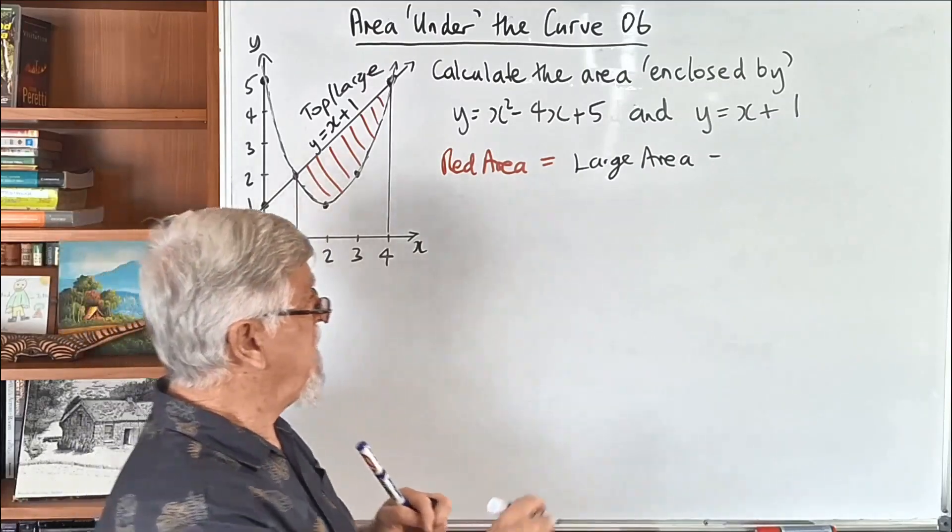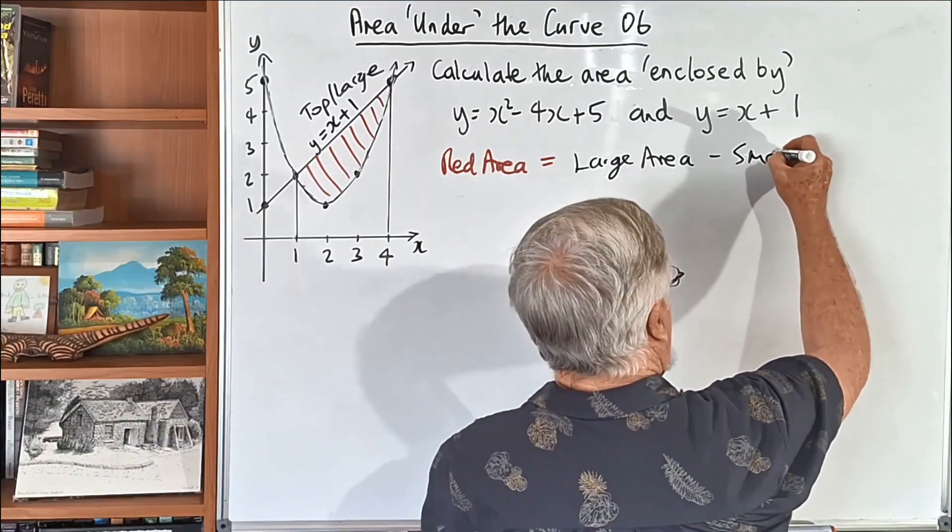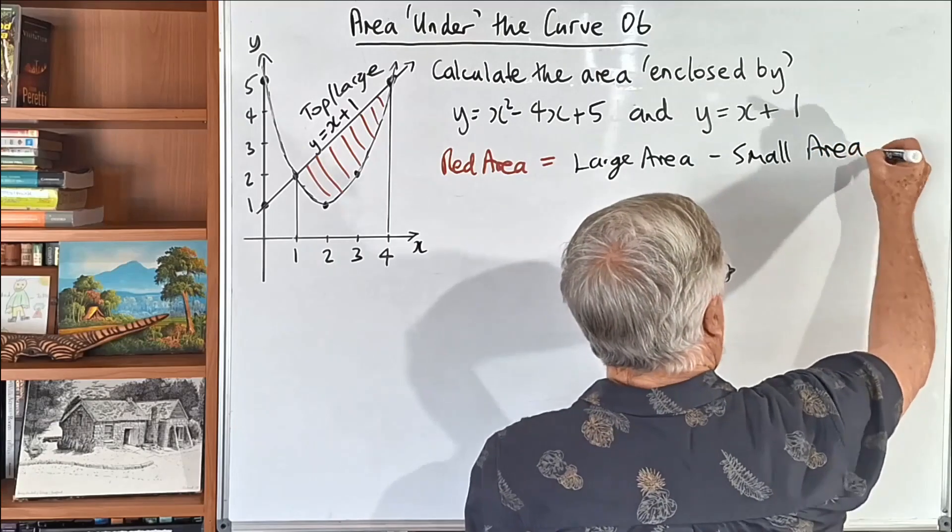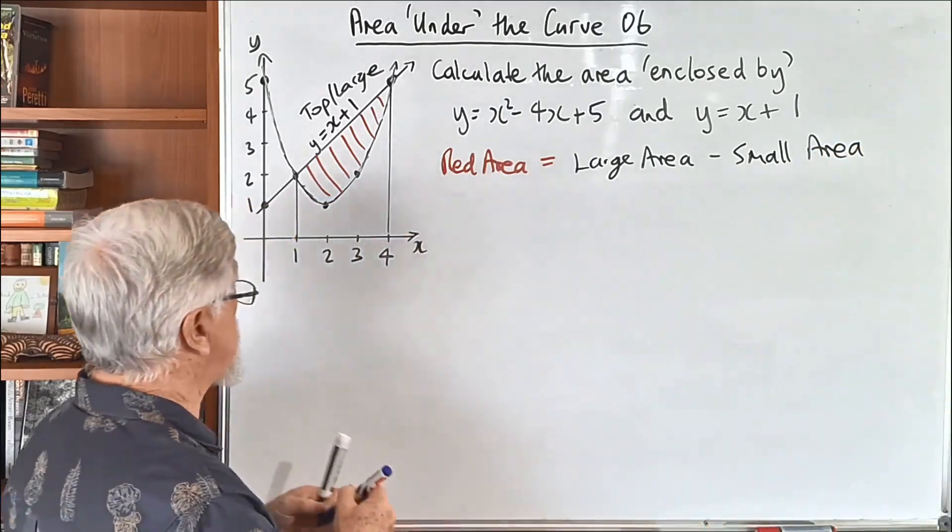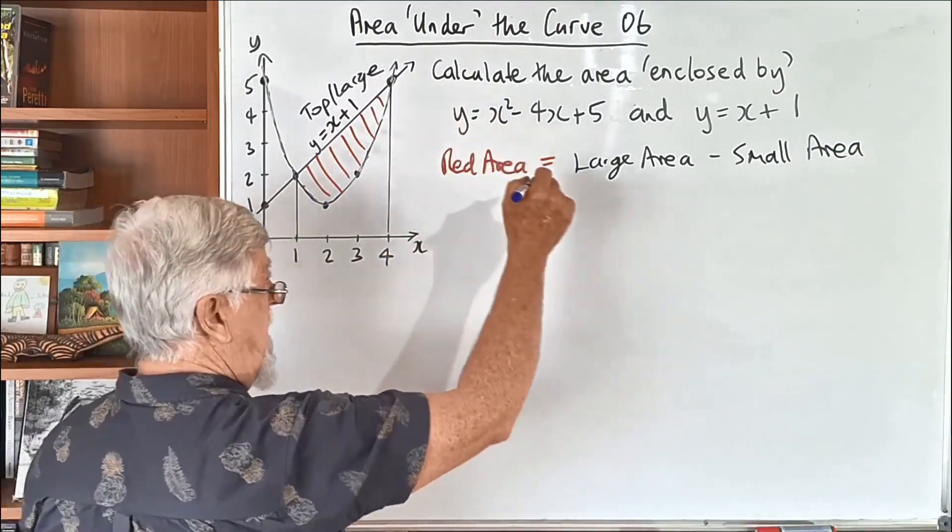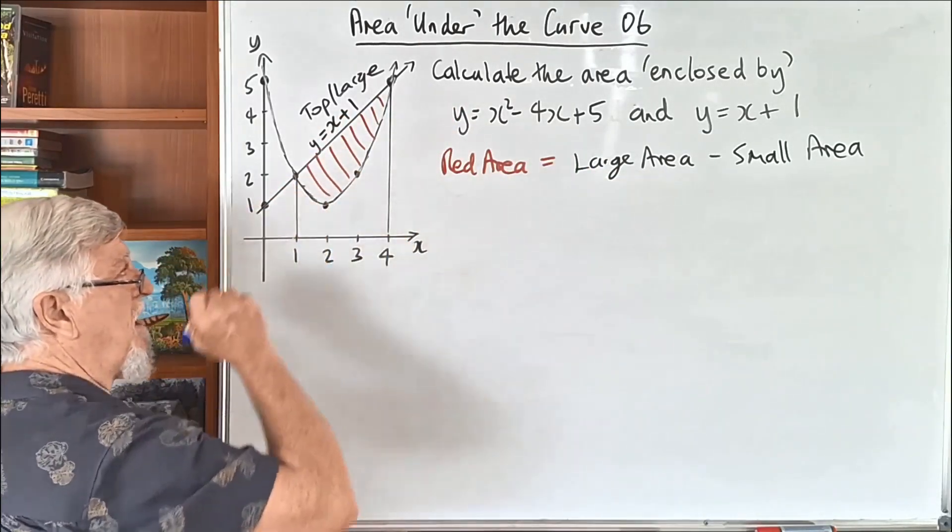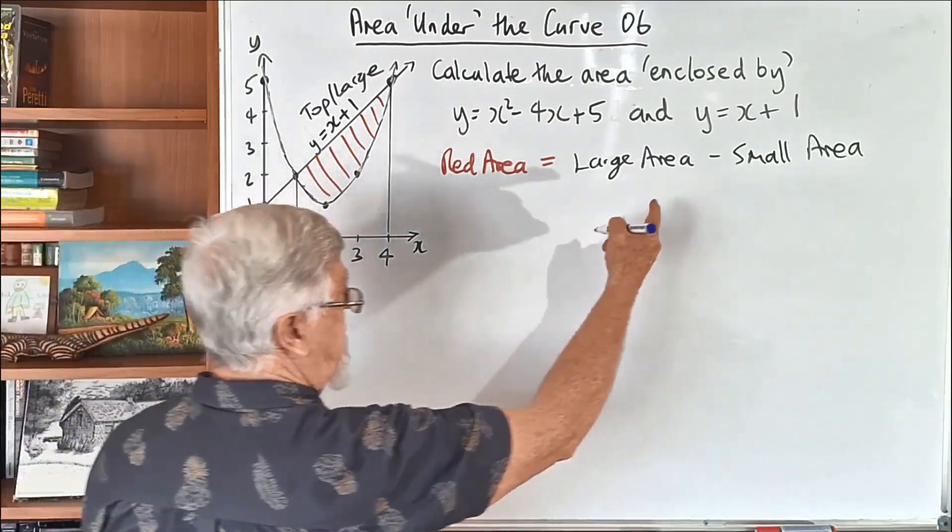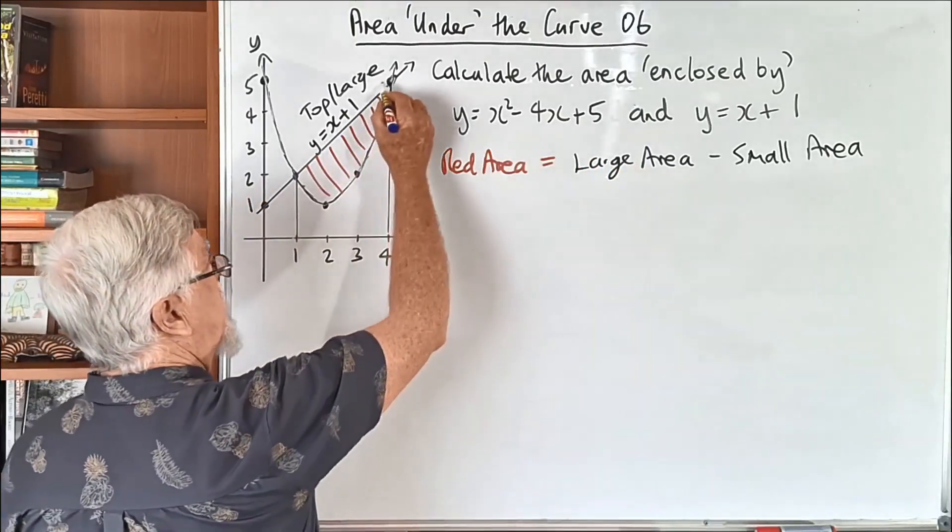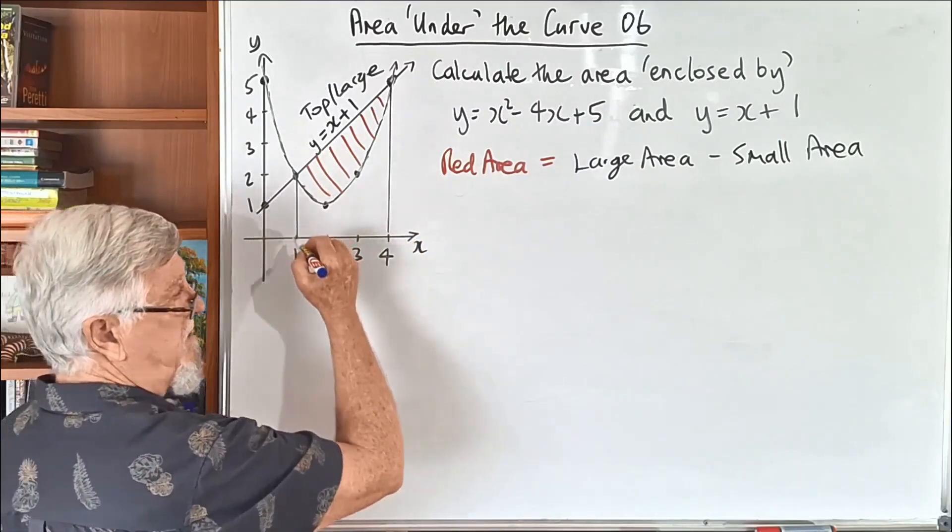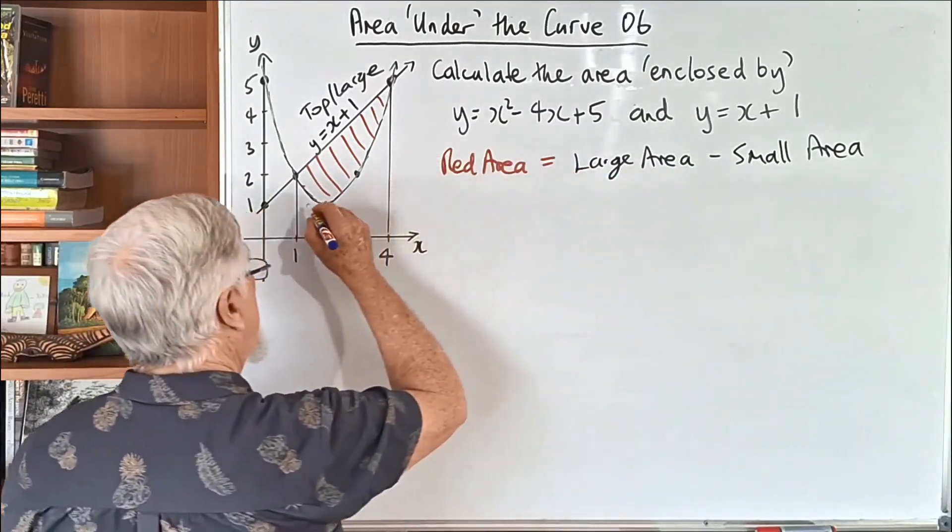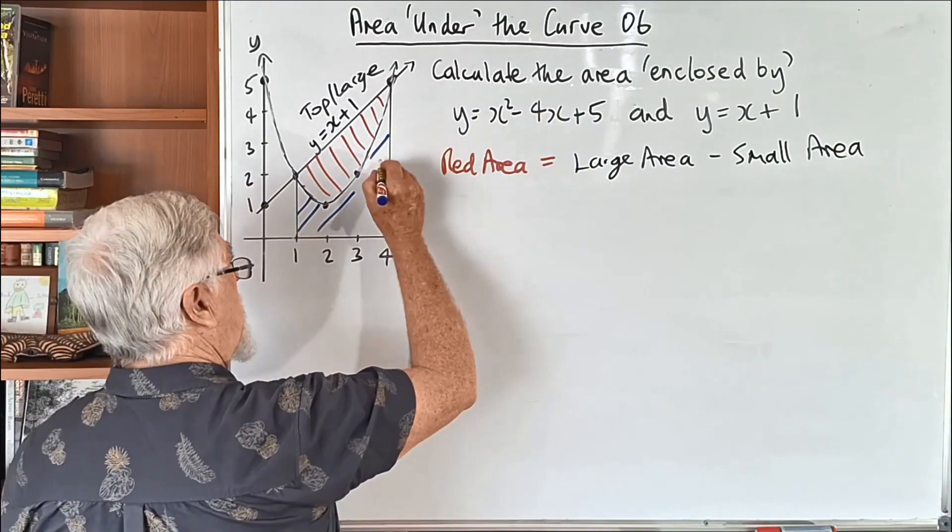And then we're going to subtract the small area. Now, we need extra lines to be able to do that. So if I run some lines in here. So we need to get the small area, or what I call the small area. We can talk about the top area and the bottom area. Let's have a look what's going on here.